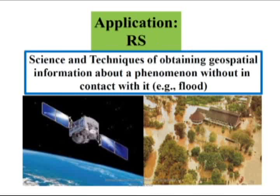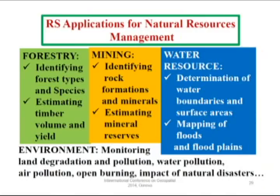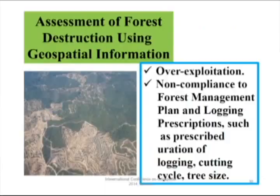Remote sensing is very important. I hope that service providers would provide this data to us very quickly, because of the advanced and rapid development in Malaysia — we really need a lot of remote sensing data. We don't have to go to the ground to collect data so that we can monitor floods. Flood is a natural disaster in Malaysia that occurs everywhere in the country, at least twice a year in certain regions or states. Remote sensing applications cover forestry, mining, water resource, and environmental monitoring and management.